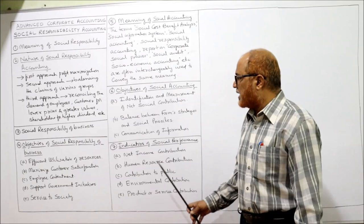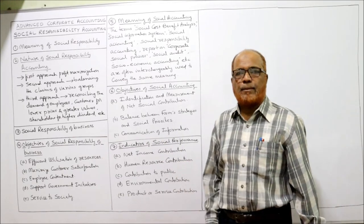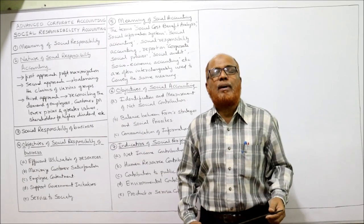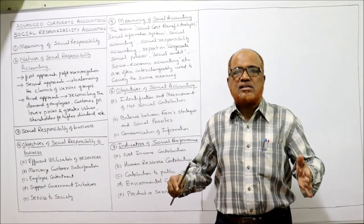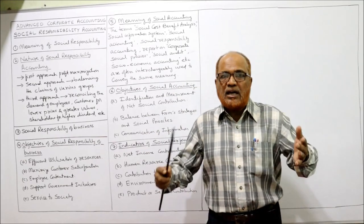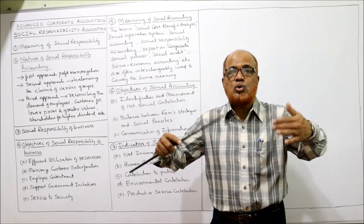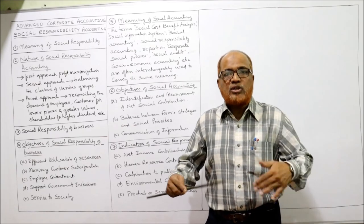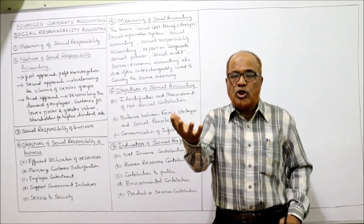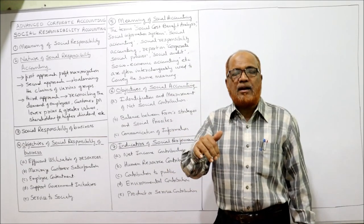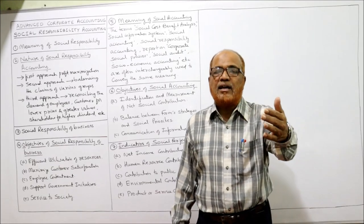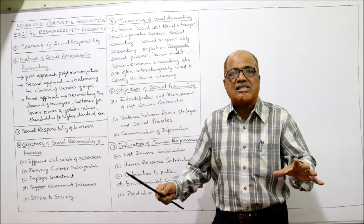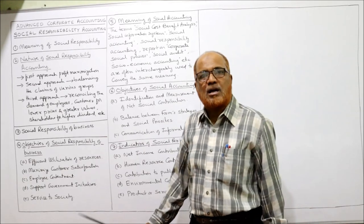Similarly, if the company focuses only on social responsibility ignoring profit-making, the company will collapse — there should be a balance between income strategy and social strategies. Third objective: communication of information. Social responsibility activities should be communicated to the public and society. A business organization must communicate what activities it is doing for social responsibility — how much it spends on human welfare, taxes paid, roads laid, and pollution control.